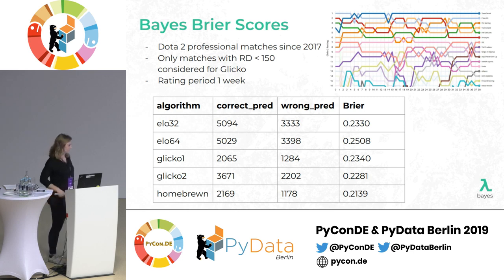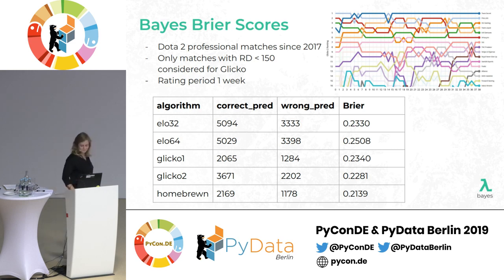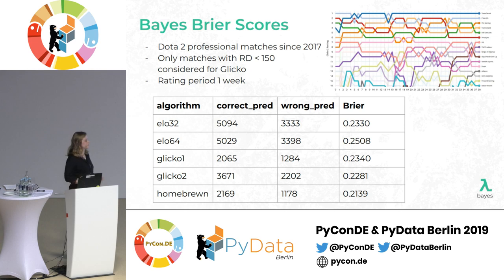Question: You mentioned part of your work is predicting which team is going to win, which is how betting companies make odds before the match. Modern betting companies also have in-game odds — how is in-game odding done? Once we're in-game, we can use in-game measures: how much gold they have, which weapons do they have, where they are on the map, etc. This is of course a much better indication of who's going to win than the pre-match rating of the teams.